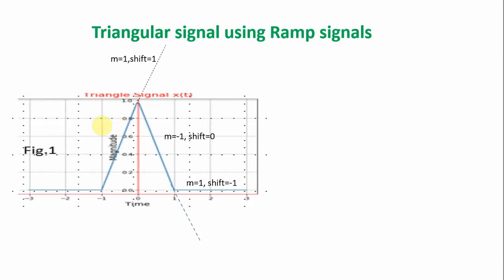A triangular signal, as you can see here in figure 1, consists of two straight line segments. It is 0 for a triangle with base from minus 1 to plus 1 and high vertex at 1. It is 0 for t less than minus 1 and t greater than plus 1, and its value is 1 at t equal to 0.